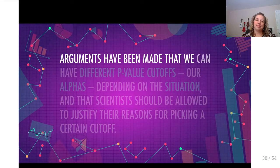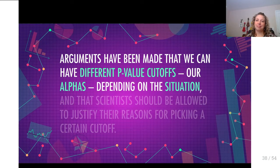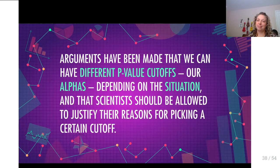Not everyone agrees that a p-value less than 0.05 is sufficient evidence to reject the null. Some studies on incredibly important things like new medications have decided alpha of 0.05 isn't low enough — they want p-values lower than 0.01, or even 0.005. The standard cutoff is arbitrary. Null hypothesis significance testing requires drawing a line in the sand somewhere, but it's not clear where. Arguments have been made for different cutoffs depending on the situation.